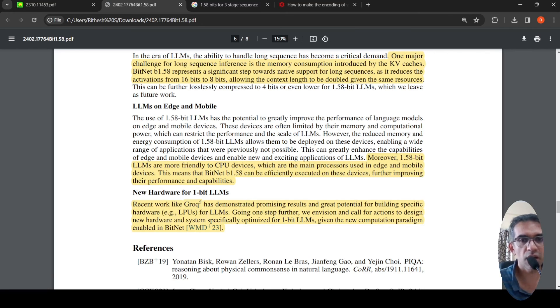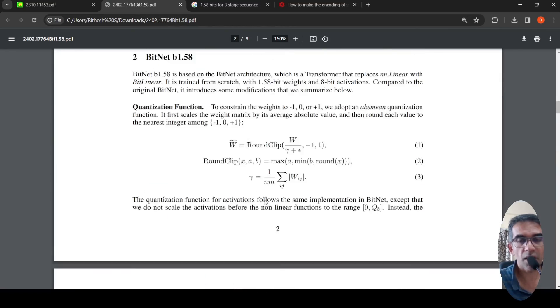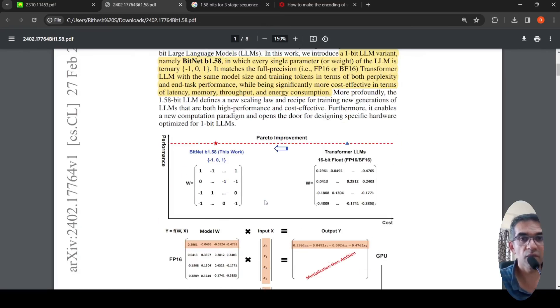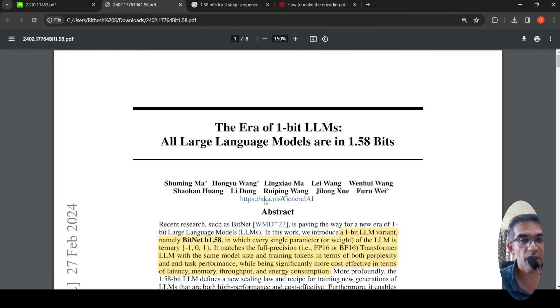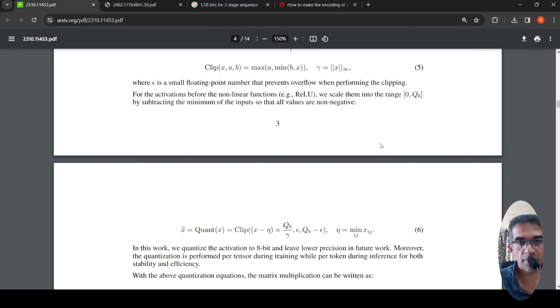And you can have LLMs on edge and mobile because these architectures are more friendly to CPU devices. And they are saying that recently Grok came up with newer architecture for faster inference. Now with this one bit LLM, you can have new computation paradigm, new kind of architectures coming up. So this is quite an exciting paper.